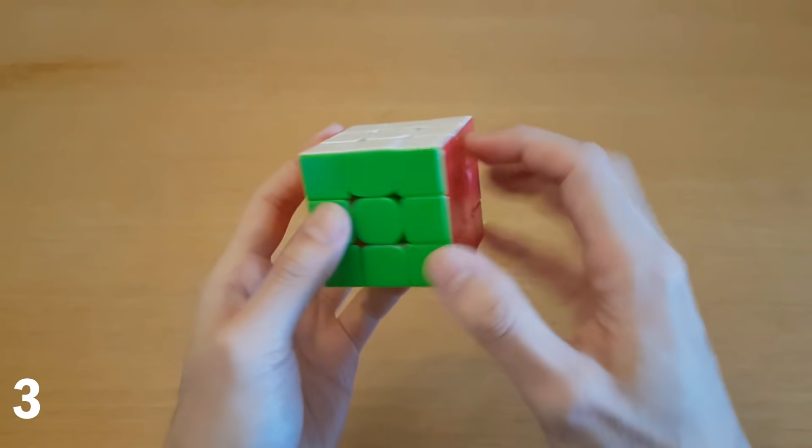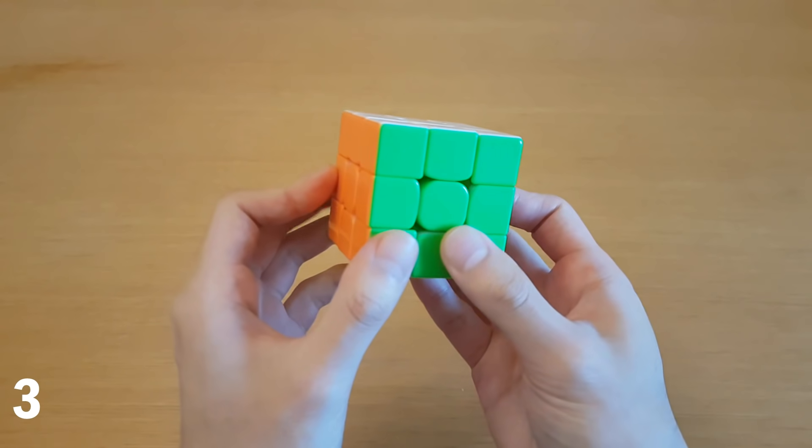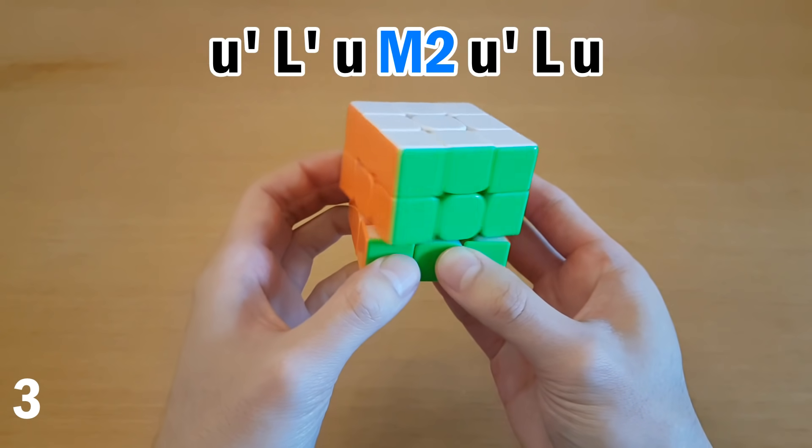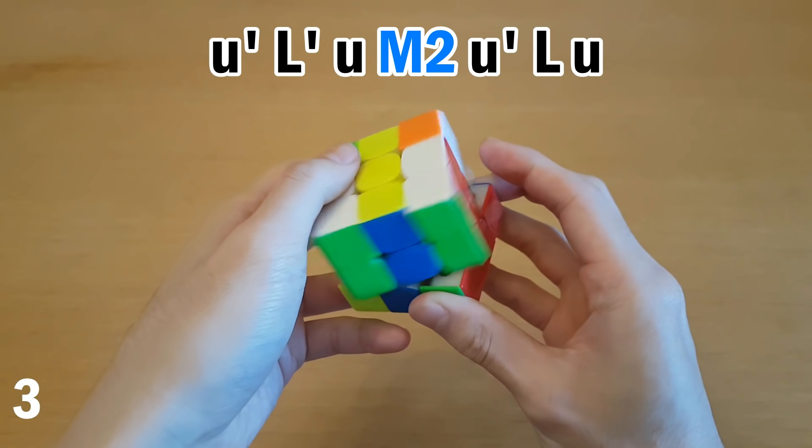Number three, H and N targets. Usually for any of the side targets, you'd have to rotate to the top here, but instead what you can do is for H and N, you can do something like this. So for H, that sets it up, and then M2, and undo.